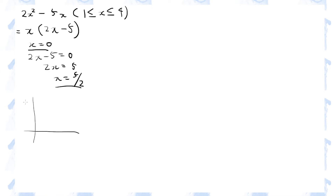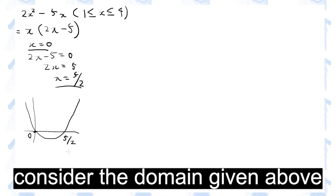So the graph should look something like this. And 5 over 2 is, of course, 2.5. x equals 1 should be to the left of the vertex, somewhere here. So the minimum value would be the y value at the vertex, and the maximum value would be somewhere around here, where x equals 4.